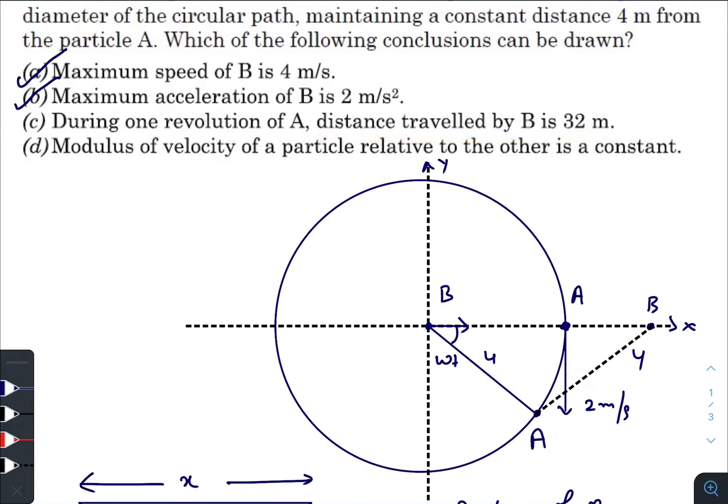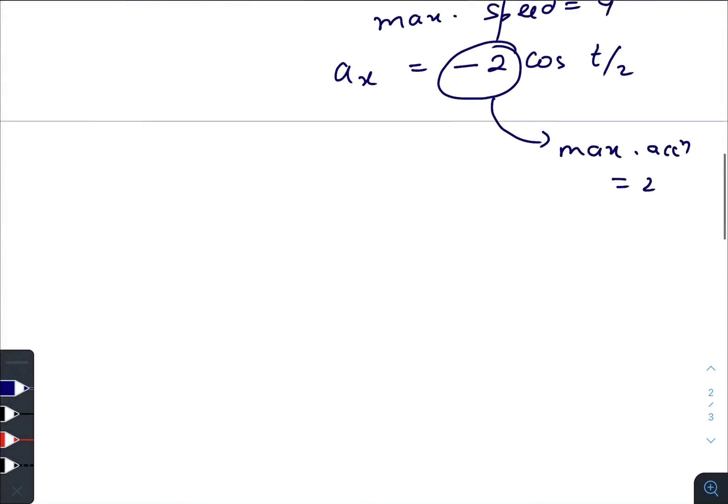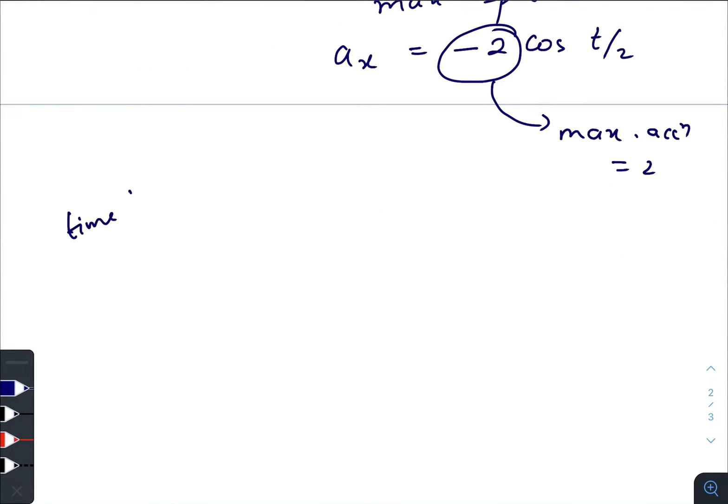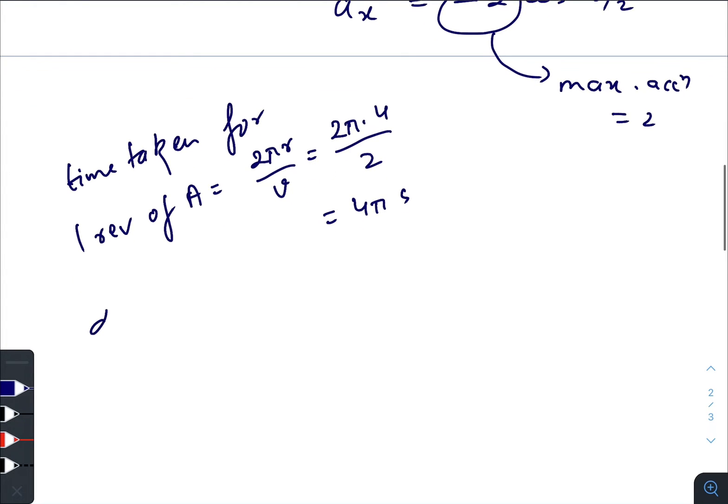So time taken for one revolution of A would be 2πr/v, so 2π × 4 / 2, that is 4π seconds. So distance traveled by B...